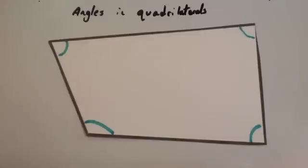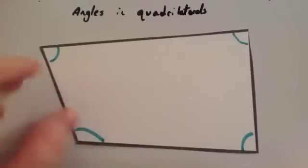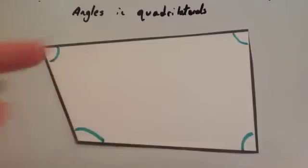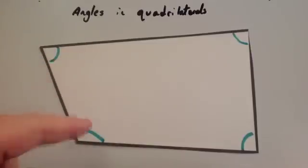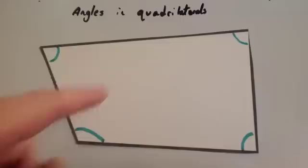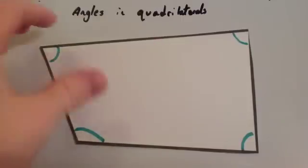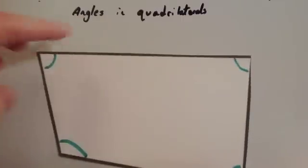In this video we're going to look at angles and quadrilaterals. Here's an example of a quadrilateral — a four-sided shape — and what I've done is I've marked in the four angles, all with a green arc, to show that they are the angles that we're going to look at.